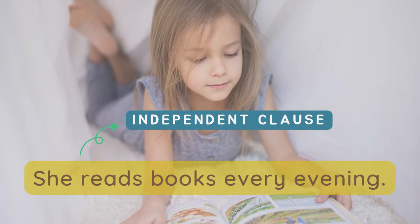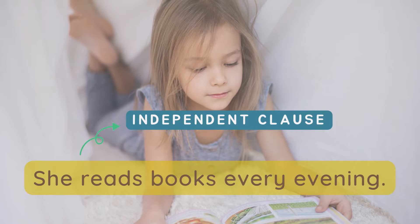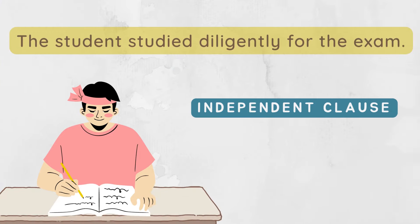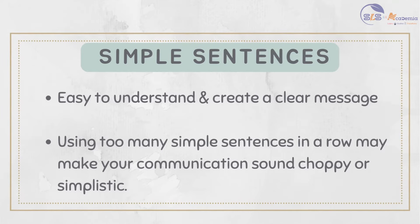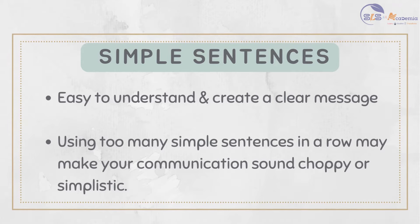'She reads books every evening.' This is also a simple sentence because it contains one independent clause. 'She' is the subject and 'reads' is the verb, and the sentence expresses a complete thought. 'The student studied diligently for the exam' is again a simple sentence with one independent clause, where 'the student' is the subject and 'studied' is the verb. Simple sentences are easy to understand and create a clear message. They are useful for expressing a single straightforward idea but using too many in a row may make your communication sound choppy. Be sure to mix in other sentence structures for variety and depth.